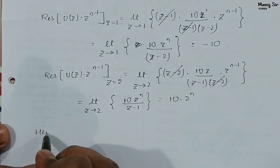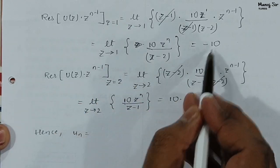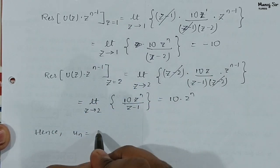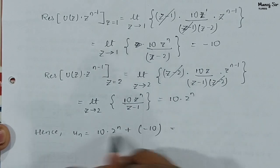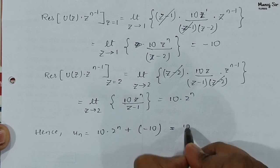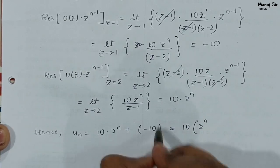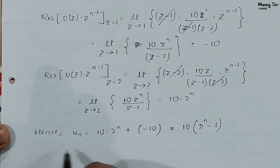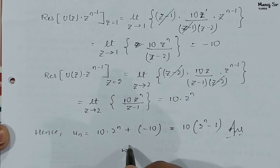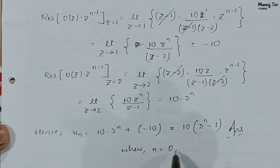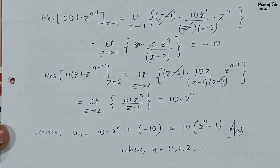Hence, u(n) equals the sum of residues: 10·2^n + (−10) = 10(2^n − 1), for n = 0, 1, 2, ... This is the final answer. Thank you so much.